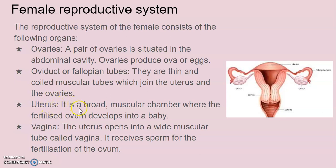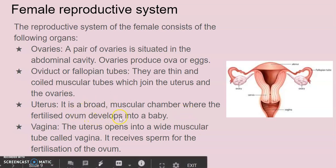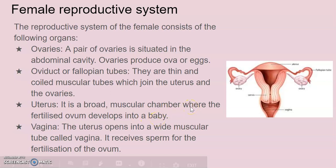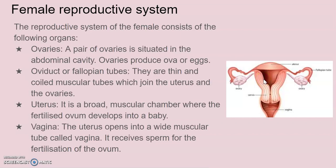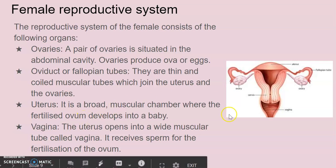The uterus is a broad muscular chamber, a bag-like structure, where the fertilized ovum develops into a baby. Next is the vagina. As you can see in this picture, the uterus opens into another chamber which is known as the vagina. It receives sperm for the fertilization of the ovum. This is all about the female reproductive system.